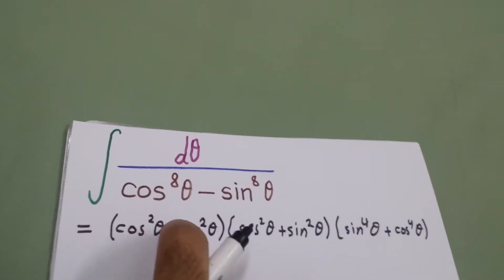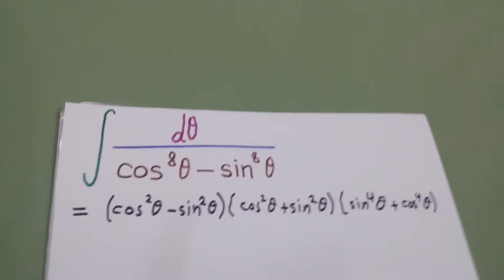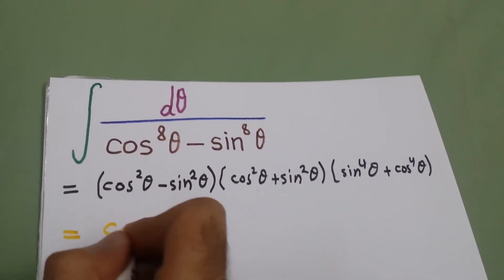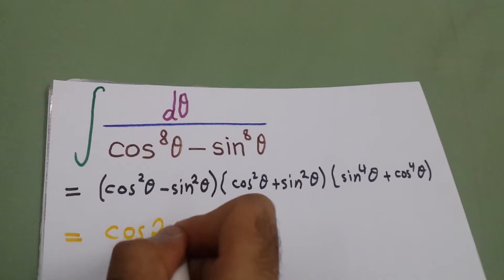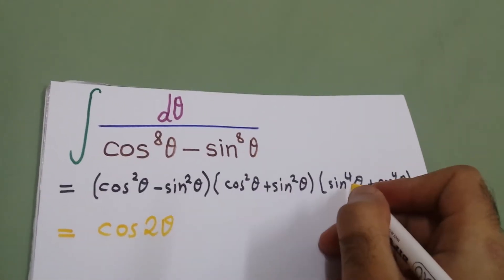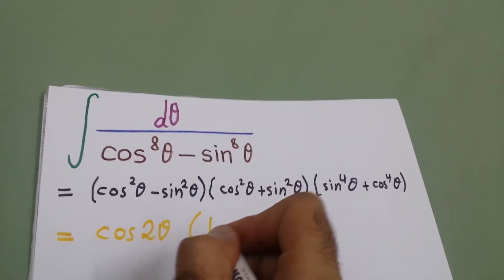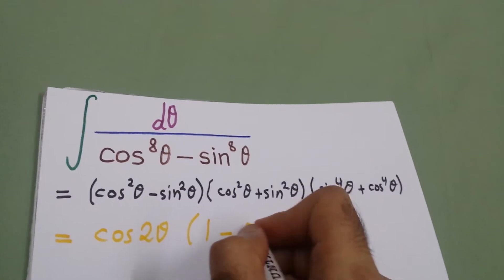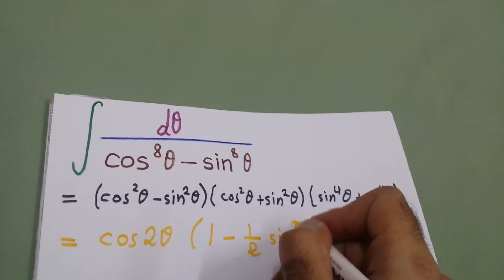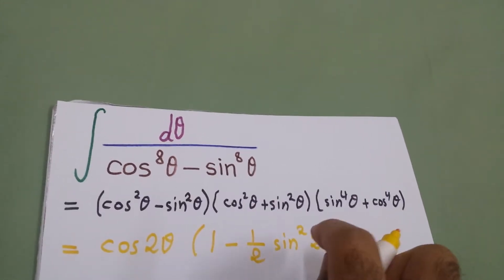We can also factor this further, but we don't need to, because we know that cosine squared minus sine squared equals cosine 2θ, and cosine squared plus sine squared equals 1. So here we can write the remaining factor as 1 minus half sine squared 2θ — see the description, I will put the link why this equals this.